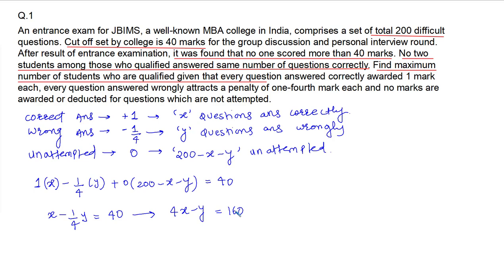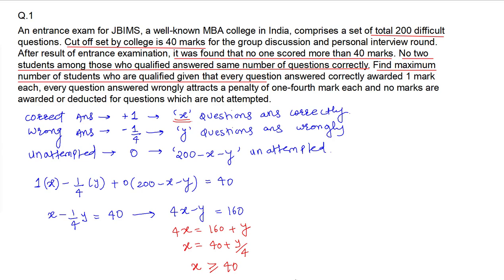From this, every student who qualified answered a different number of questions correctly. The number of questions answered correctly is x. So how many different values can x take? From 4x equals 160 plus y, we get x equals 40 plus y/4. So the value of x has to be greater than or equal to 40. If y equals 0 — a student answered only 40 questions all correctly — they get 40 marks. So x can equal 40, confirming x is greater than or equal to 40.